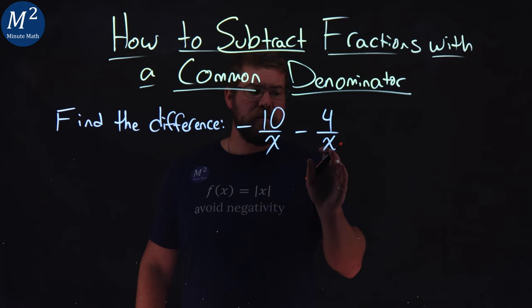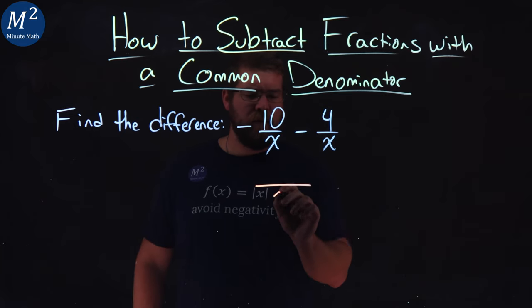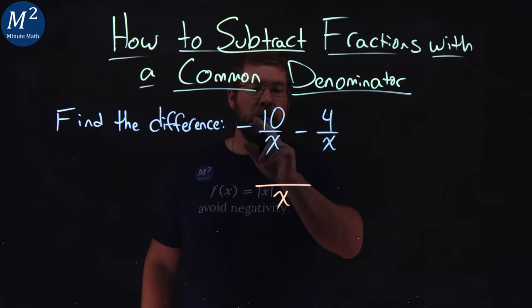So when we have that, we can combine these fractions to be one big one. So I keep x in the denominator, and now I look at the numerators.